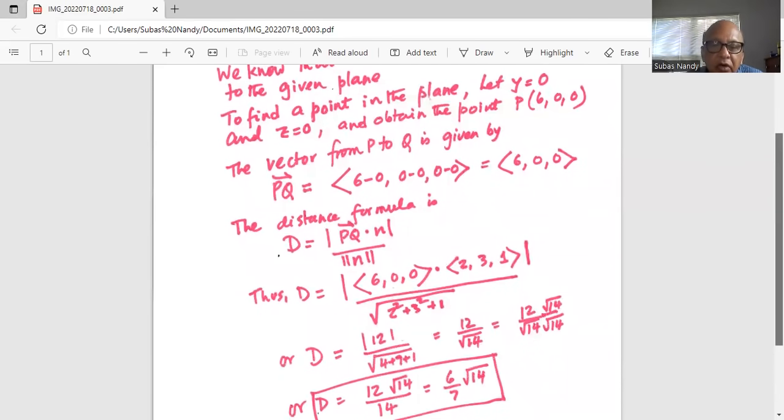So dot product, you multiply the coefficients, so 6 times 2 is 12, the rest are all zeros, because 0 times 3 and 0 times 1 are 0. So absolute value of 12 divided by square root of 2 square plus 3 square plus 1, which is 12 divided by square root of 4 plus 9 plus 1, which is square root of 14.